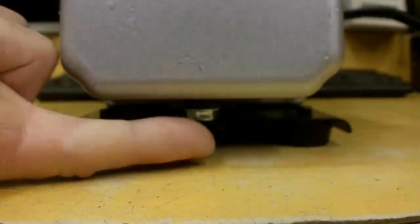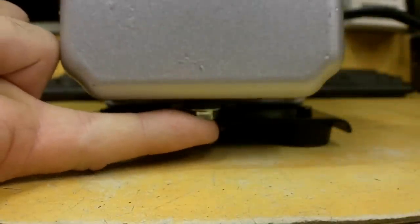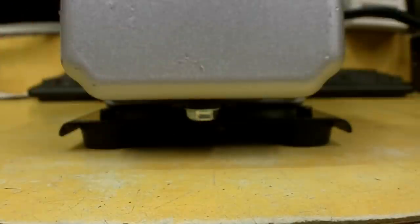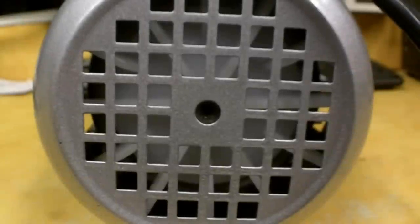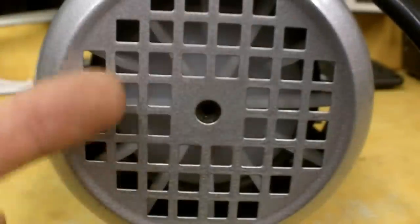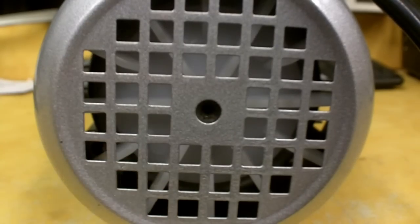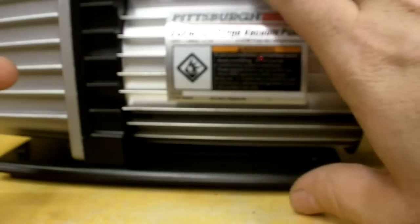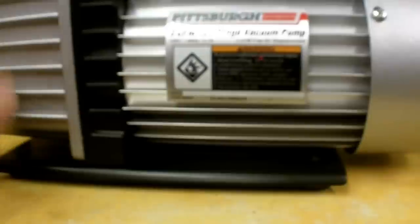This is the drain plug right here to drain the oil when and if you need to change it. Just simply take that out, drain it, put it back in, and fill it back up with oil. It also does have an externally fan-cooled motor on it underneath this rear shroud. Hopefully you can see the cooling fan in there. It seems to move quite a bit of air across these fins right here, just from feeling it running. So it should keep everything quite cool and it should work just fine.